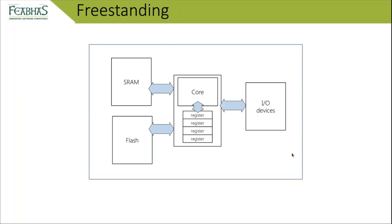In a freestanding deeply embedded environment, we have a traditional architecture with a core supporting registers and the ALU. We'll normally have persistent memory — most commonly flash — and non-persistent memory such as SRAM. There are also IO device peripherals. Our main interest is the SRAM and the flash, because this is where our program execution generally takes place.